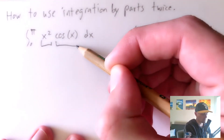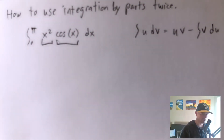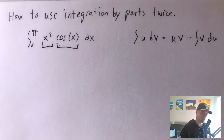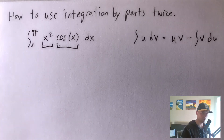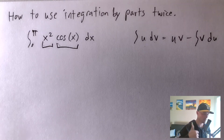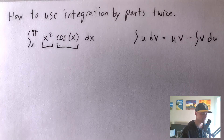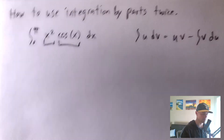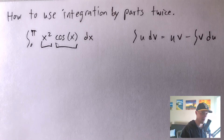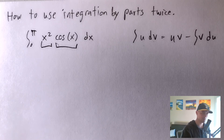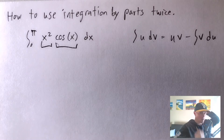So let's think about our two pieces: x squared and cosine x. We're going to have to take the derivative of one and the anti-derivative of the other. If we take the derivative of x squared using the power rule, we're going to lower our power by one, giving us some constant times x. If we take the anti-derivative, the power rule raises the power by one, giving us some constant times x cubed. Typically it's easier to deal with lower powered x's, so x times a constant is preferred over x cubed times a constant.